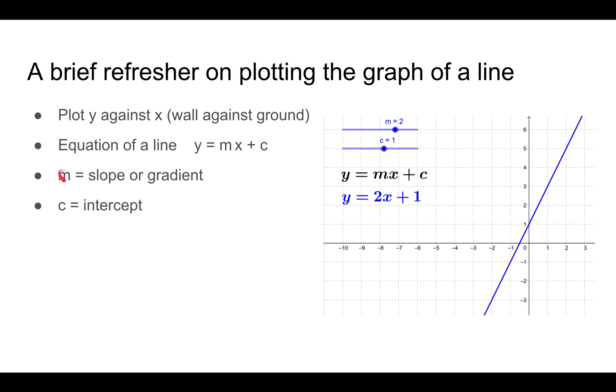We often write the equation of the line as y equals mx plus c. Here m is the slope or gradient, and c is the y-intercept. For example, this line y equals 2x plus 1, the blue line: if you set x to 0, then y equals 1—that's the intercept. If you increase x by one unit, you increase y by two units—that's the slope.